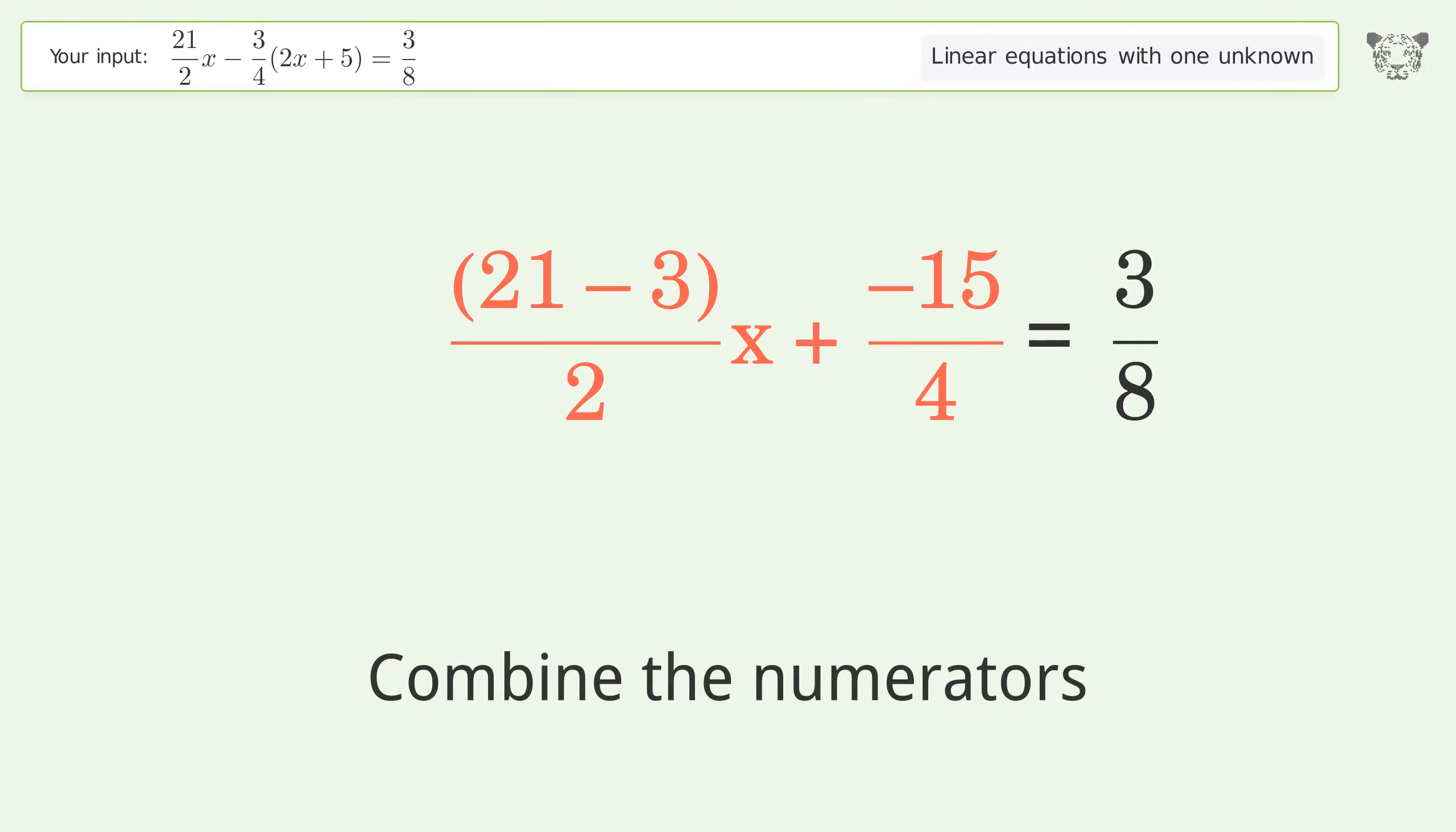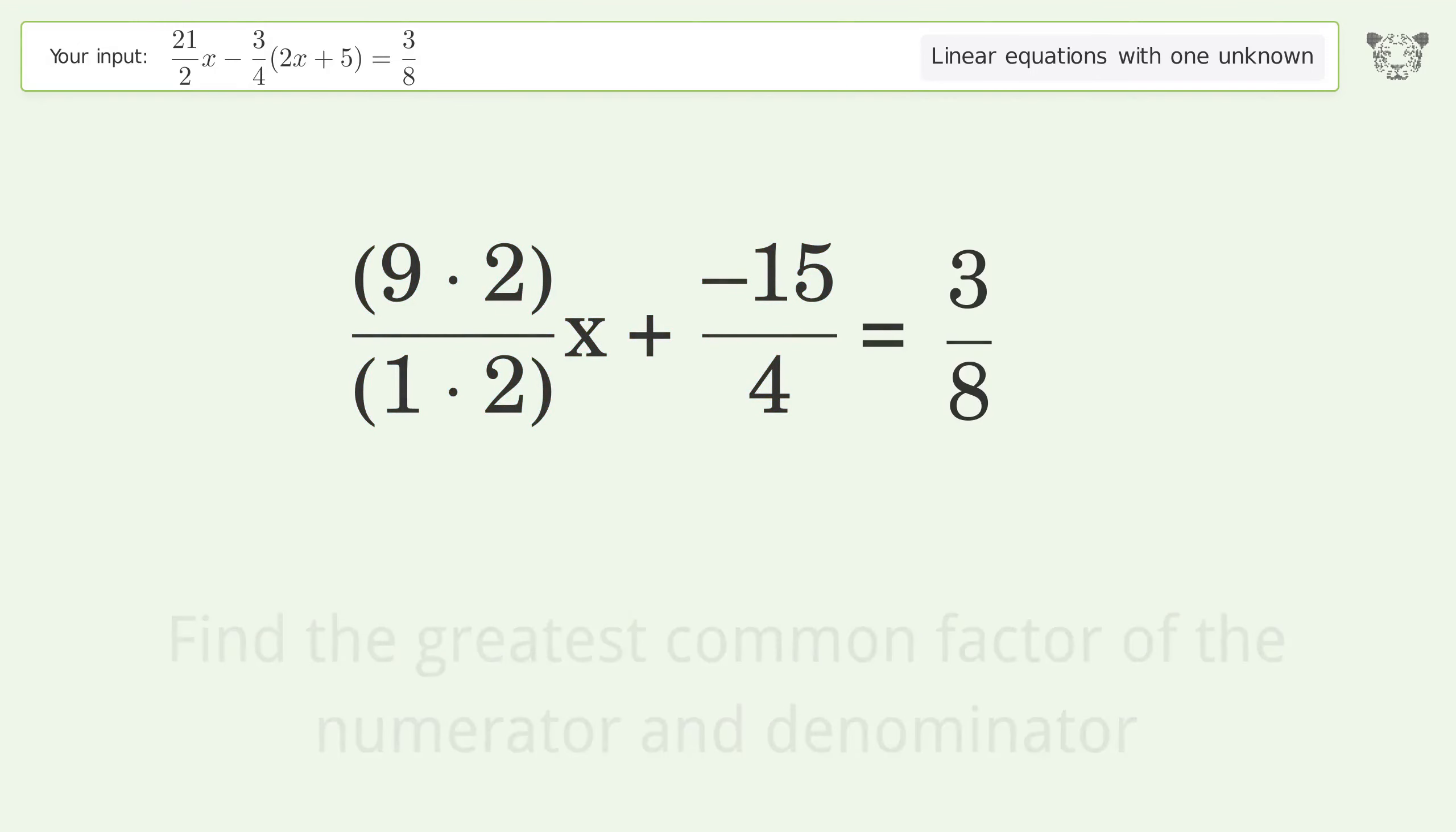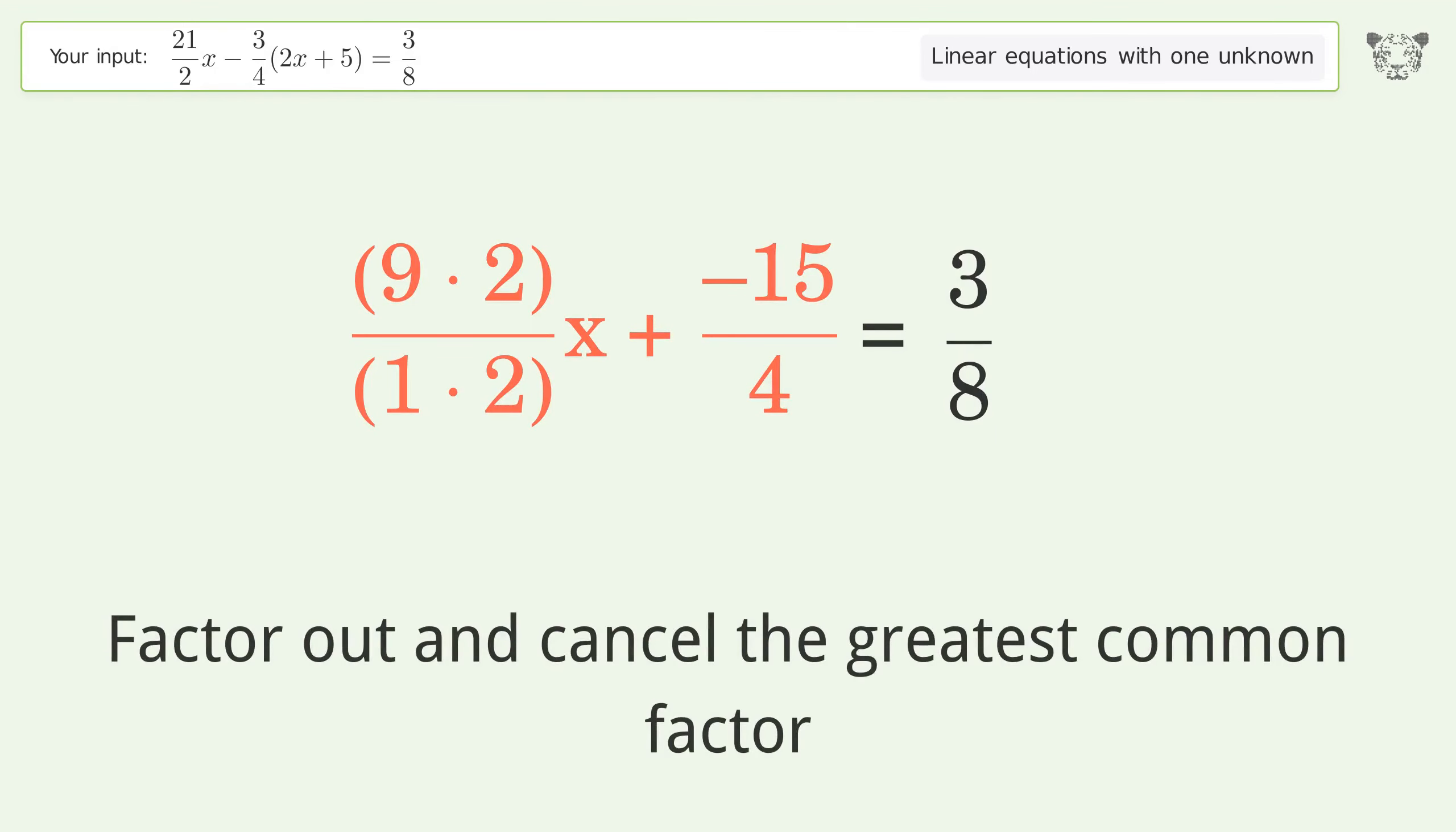Combine the numerators. Find the greatest common factor of the numerator and denominator. Factor out and cancel the greatest common factor.